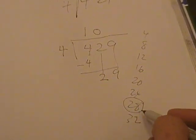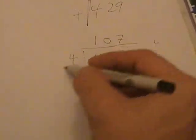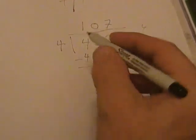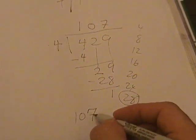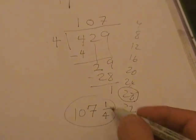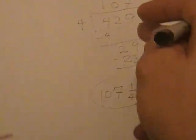4 times what is 28? 7. That makes 28. And 1 left over. So this would be 107 remainder 1, which you can also express that way. That's the 1. It's over 4. That's long division.